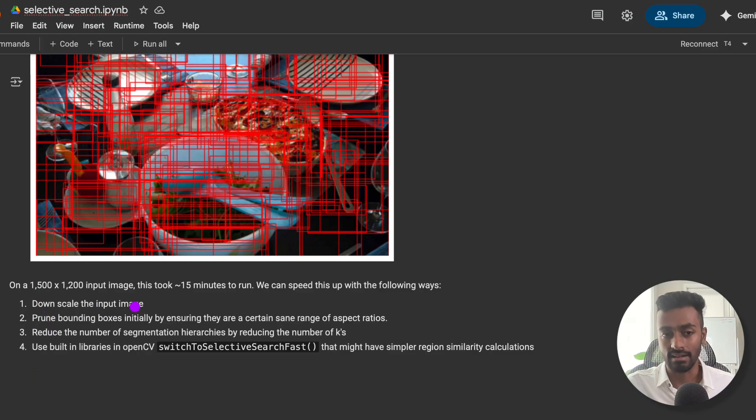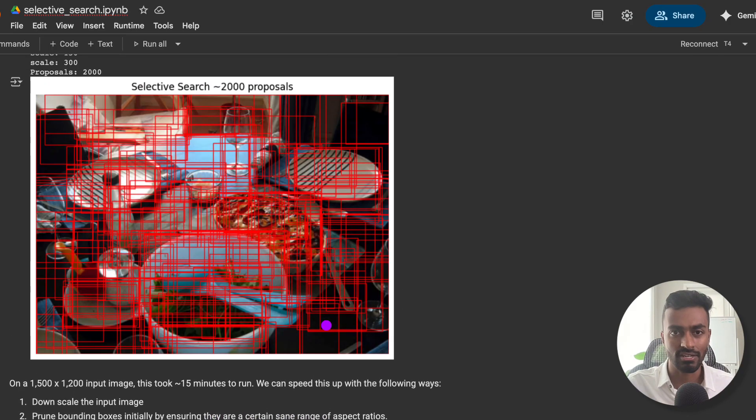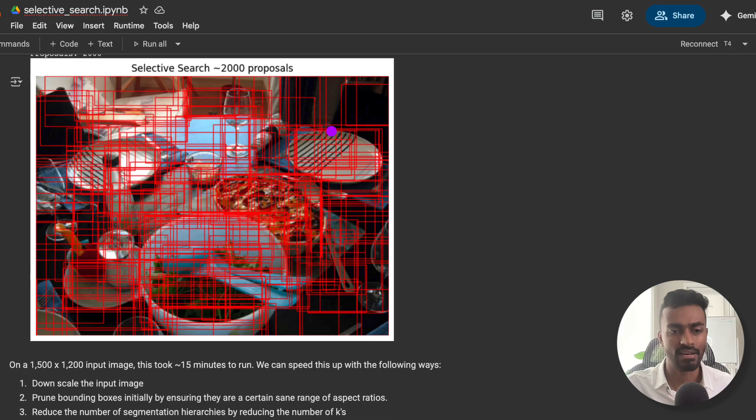One is to downscale the input image. The second is to prune the bounding boxes initially by ensuring that they are some sane range of aspect ratios. So we don't want bounding boxes to be very tall single pixel slivers, because that doesn't really make sense. So we are just culling them all together so that we don't need to create bounding boxes and sort them all, and there's no need to process it.